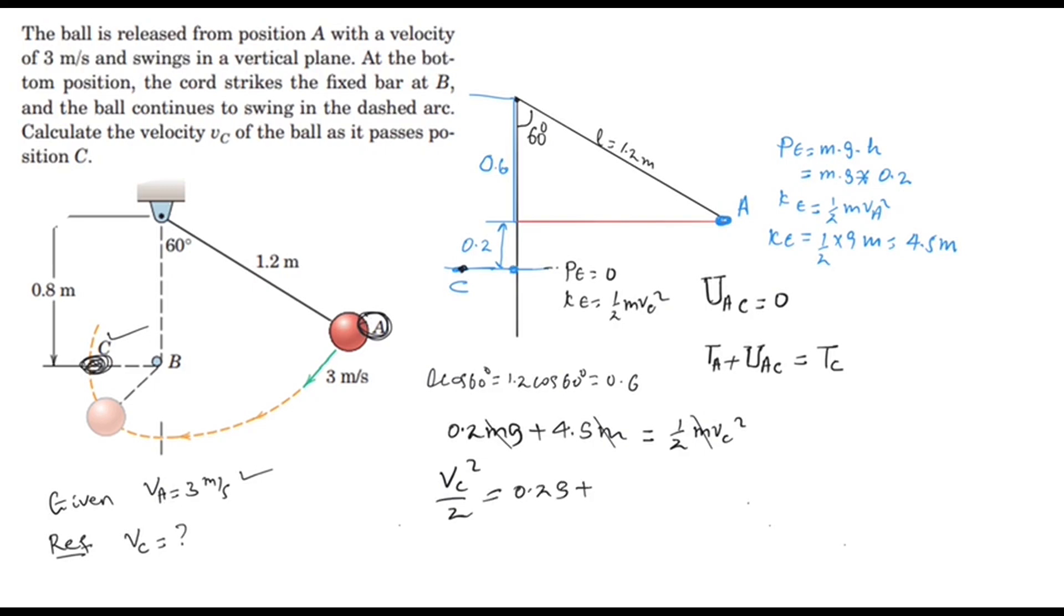If we multiply by 2, we'll see velocity of C squared equals 0.4G plus 9. This is the velocity of C.